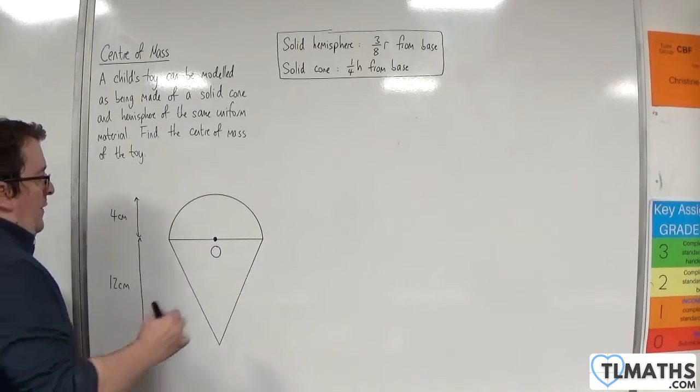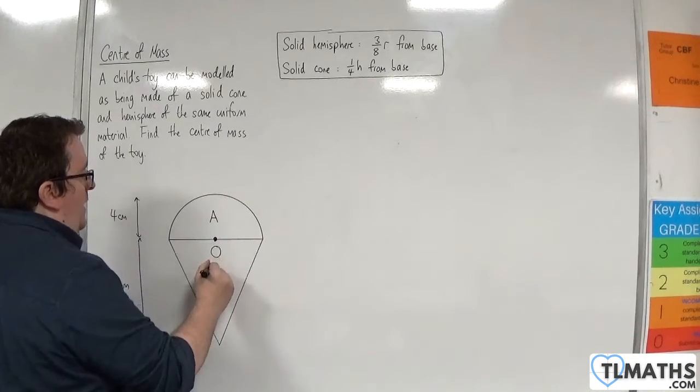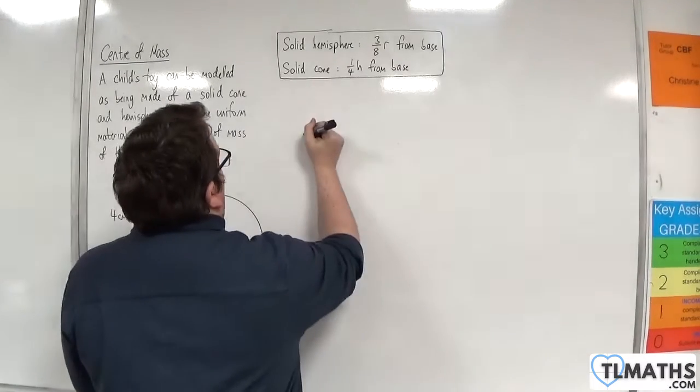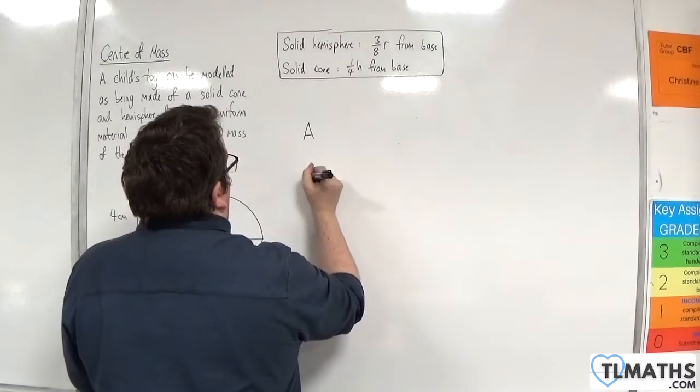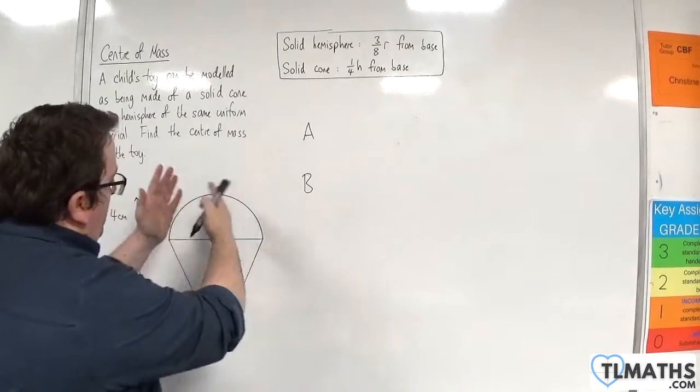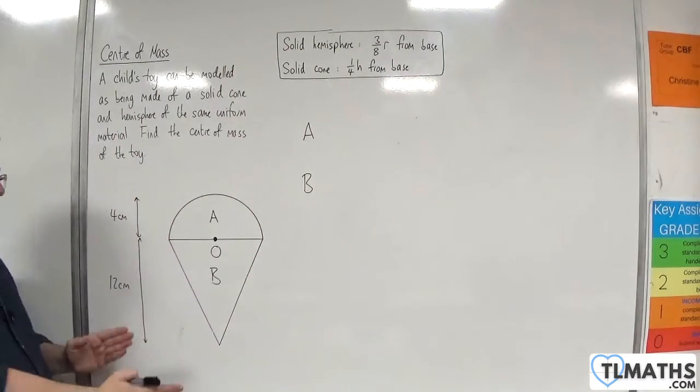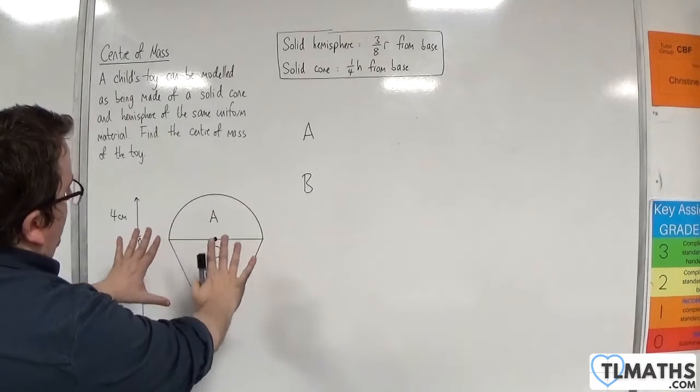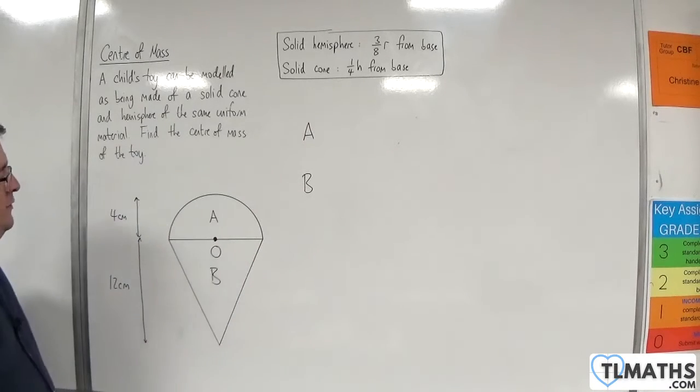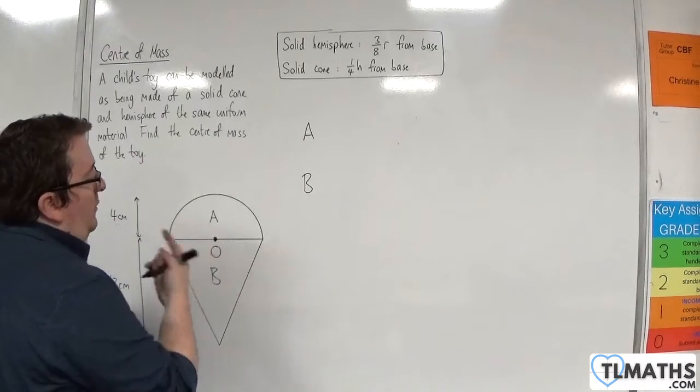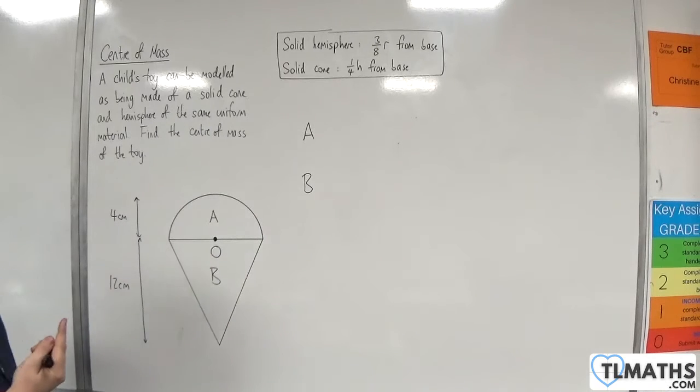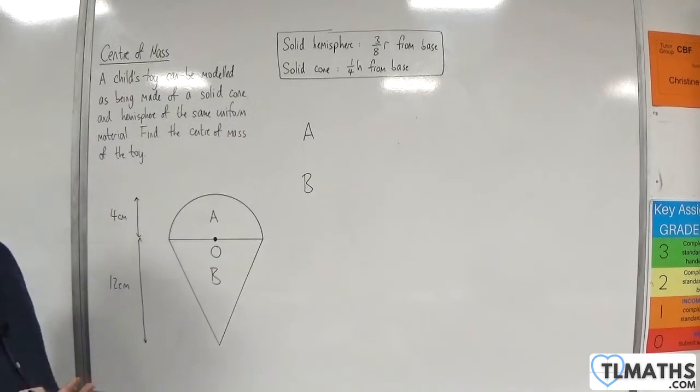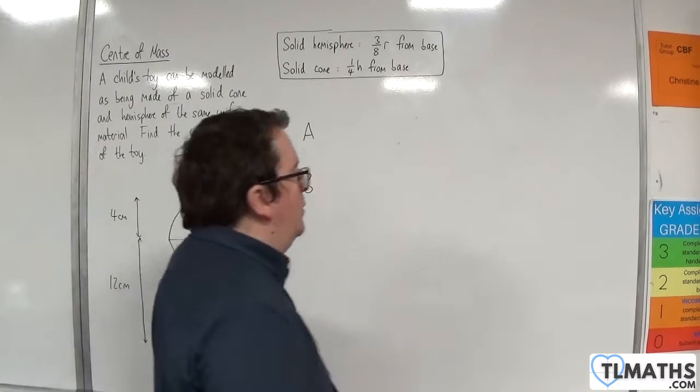OK, so let's call the hemisphere A and the cone B. So A and B. So because I'm looking at it as a 2D face-on, I just need to work with X's and Y's because the shape is symmetric about your Z-axis, essentially. So I don't need to think of a Z-coordinate here. I could just work with X's and Y's.